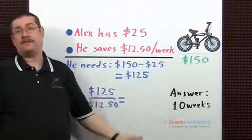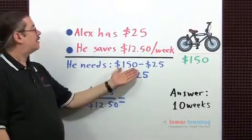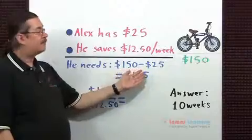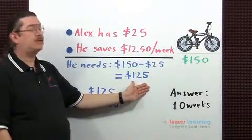To find out how many weeks he needs to save his money, let's first find out how much he still needs to save. The bicycle is $150. Subtract the money he already has, $25, you get $125.